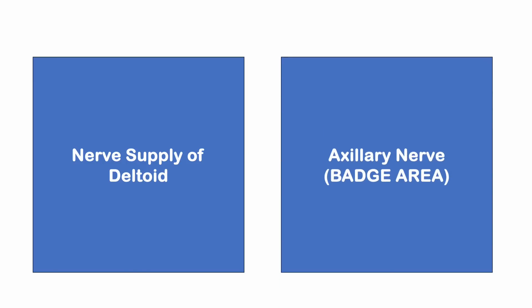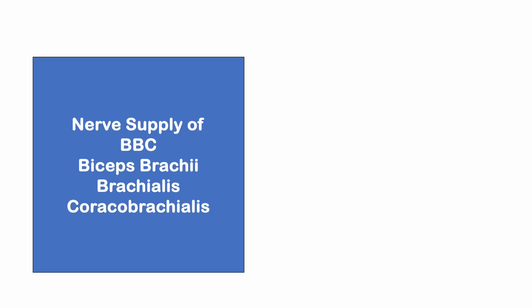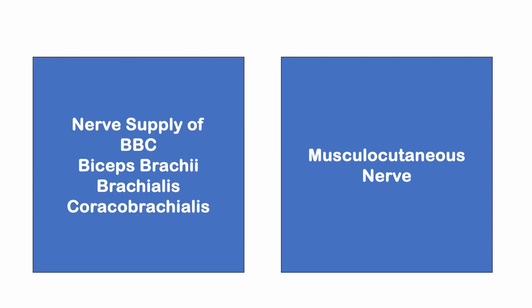The nerve supply of deltoid is the axillary nerve — you check sensation at the regimental badge area. The nerve supply of the BBC — biceps brachii, brachialis, and coracobrachialis — is the musculocutaneous nerve. This is commonly tested. A memory tip: people with huge biceps are called muscular people, so biceps = musculocutaneous nerve.